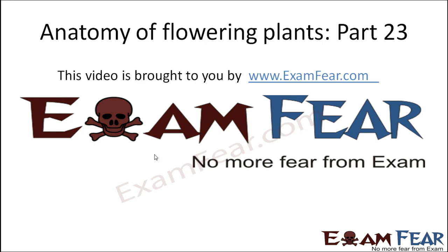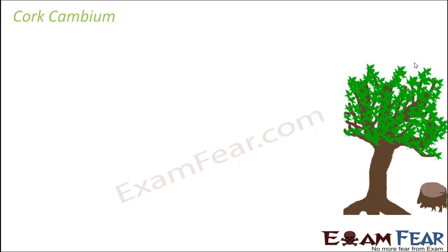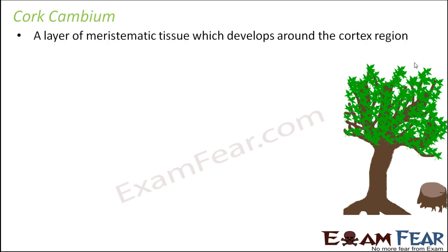Hello friends. This video on anatomy of flowering plants part 23 is brought to you by examfear.com — no more fear from exam. Let's talk about the next type of cambium, that is the cork cambium. This is again a layer of meristematic tissue which develops around the cortex region, and that is why it is called cork cambium.